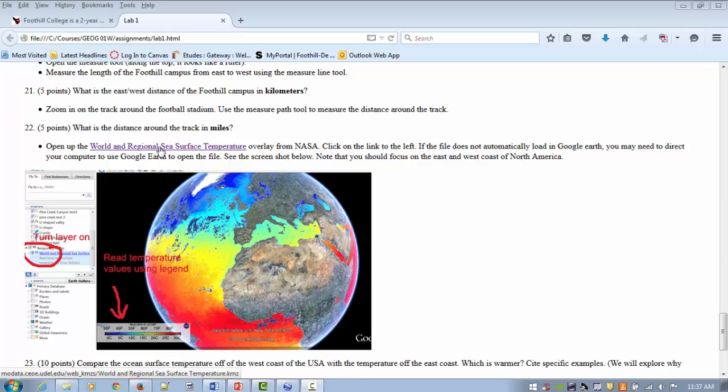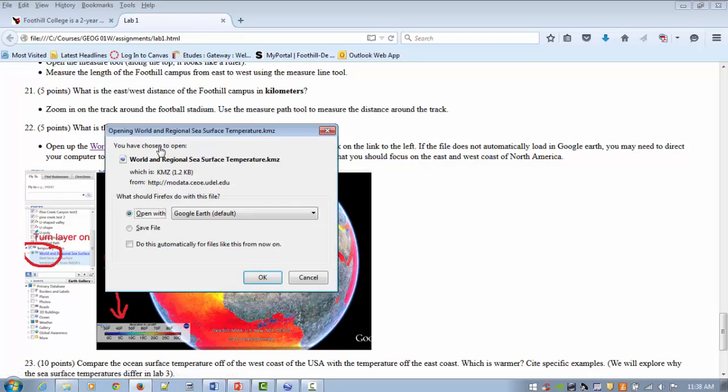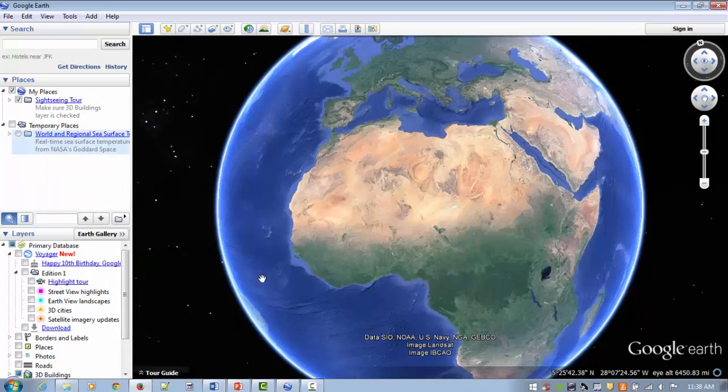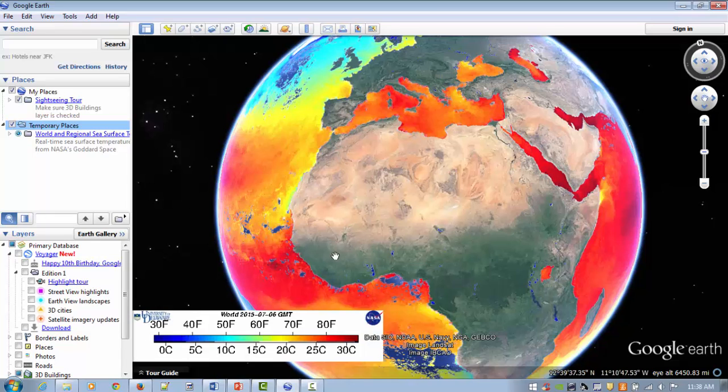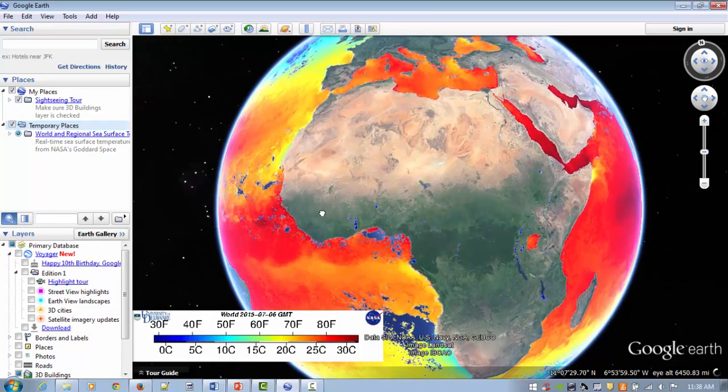So, to do this, we want to open up the World and Regional Sea Surface Temperature link, which will open and load a KMZ file, which is an overlay in Google Earth. It should automatically load in Google Earth. If it does not, you can always navigate this file to tell it to open with Google Earth. So, I'm going to say OK. And, here is Google Earth. My world and regional sea surface temperature is over here in my temporary places. I will turn it on, and, just like that, we can see the ocean surface temperature.